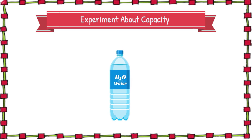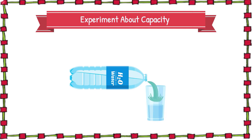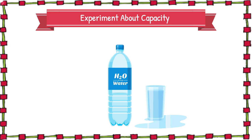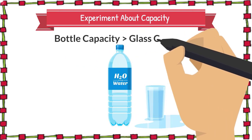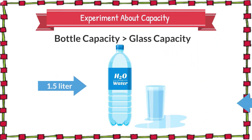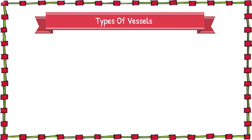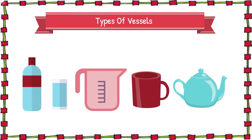Here we have a bottle full of water and an empty glass. Let's pour water from the bottle into the glass. Did you notice the water started spilling from the glass, yet there is still more water in the bottle? So this bottle can contain more water compared to this glass. This shows that different containers have different capacities or space to hold liquids.